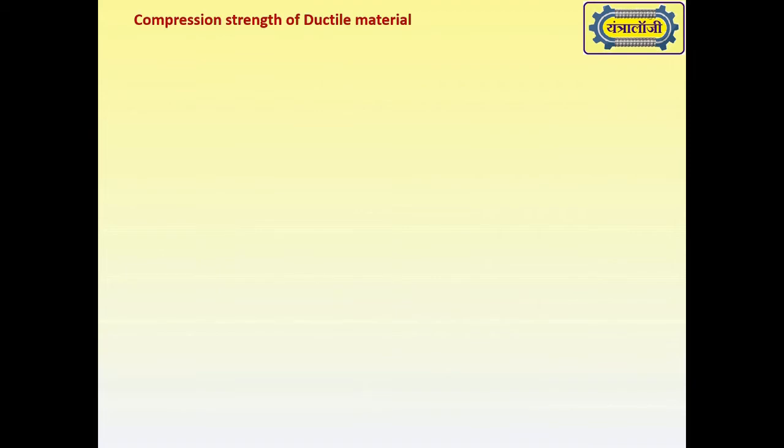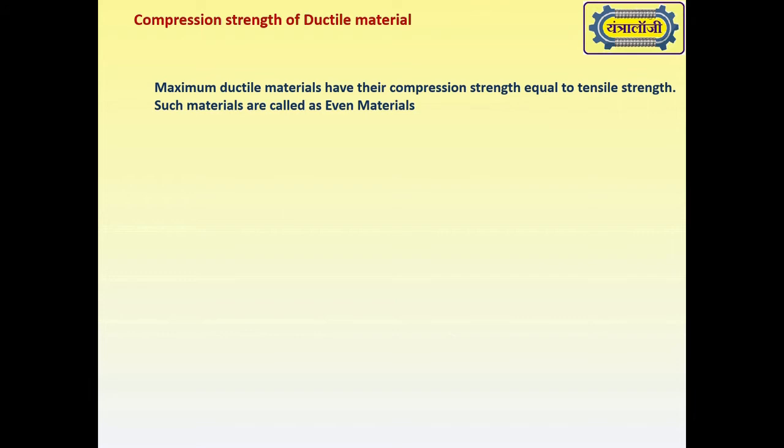Compression strength of ductile materials: Most ductile materials have their compression strength equal to tensile strength. Hence, such materials are called even materials. For example, the compression strength of mild steel is 140 to 160 megapascals.